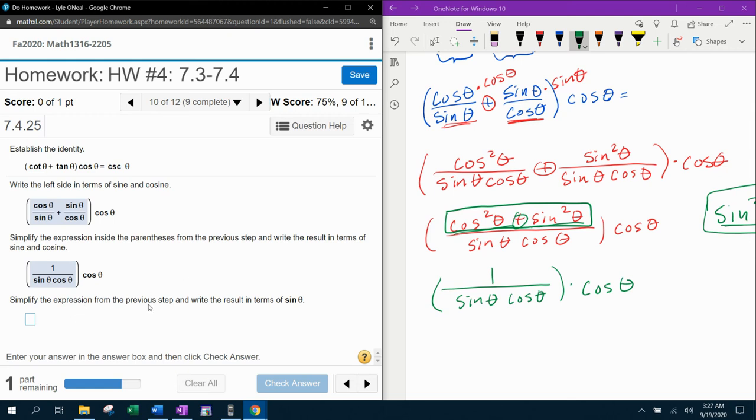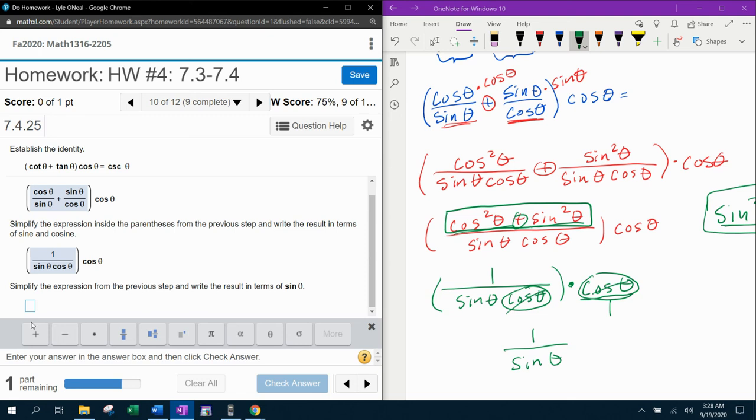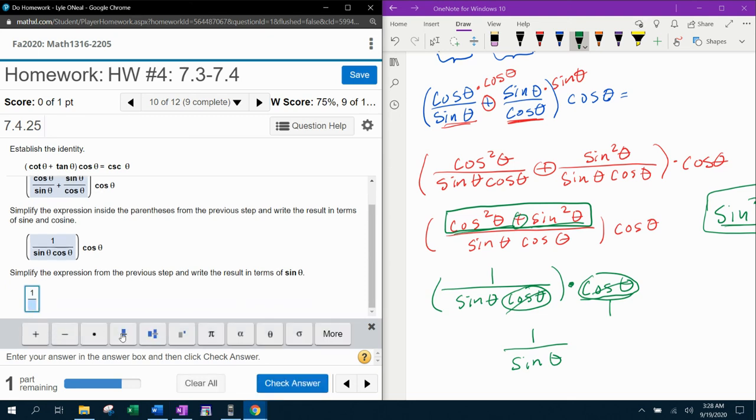Simplify the expression from the previous step and write the result in terms of sine theta. All right. So now if I look at this cosine theta as a fraction would be cosine over one here, this indicates multiplication. So I have a cosine in the top and a cosine in the bottom. Those will cancel and I'll be left with one over sine theta. So I believe what they want here is one over sine theta.